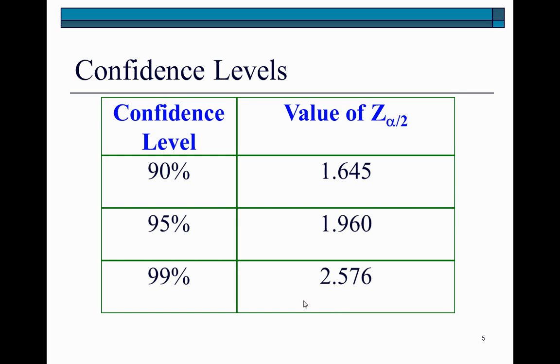In general, there are three conventional confidence levels used in statistical applications. They are 90% whose z value is 1.645, 95% whose z value, as we've just shown, is 1.96, and 99% whose z value is 2.576.